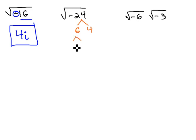24 is 6 times 4, 6 is 2 times 3, and 4 is 2 times 2. And we're taking a square root. With square root, we're looking for pairs.